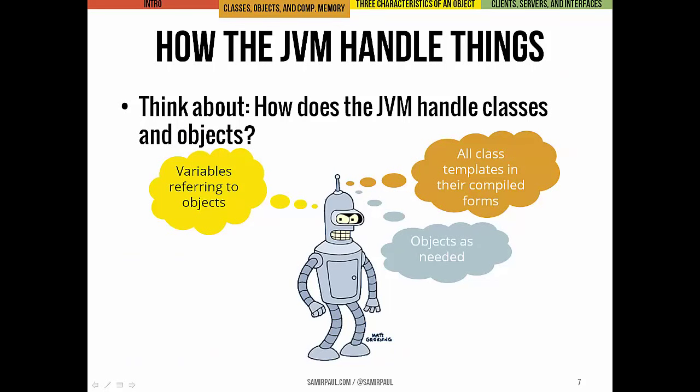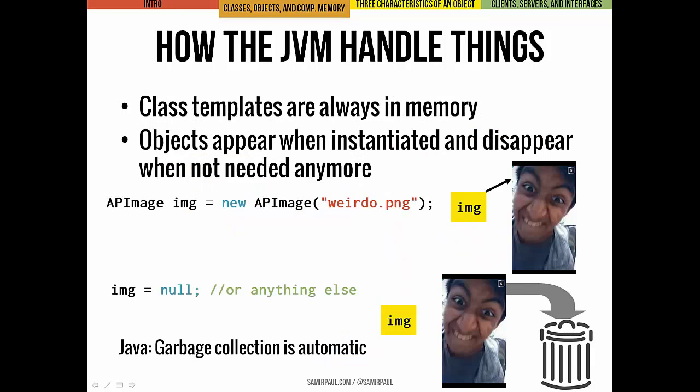It's worth starting with a high-level discussion of how the Java Virtual Machine handles things when it comes to classes and objects. When you run a Java program, the computer memory has to hold three basic things: all the class templates in their compiled form, the variables that refer to those objects, and any objects we've created as needed. Class templates are held in memory the entire time — when you compile your classes, they turn into .class files, Java bytecode. Those are always held there, and that's where each method's bytecode lives, as part of its class template.